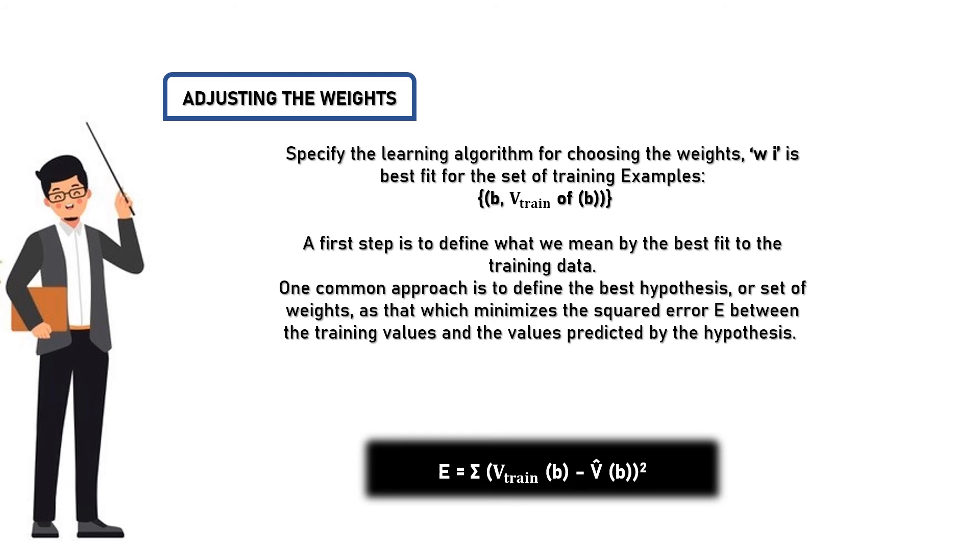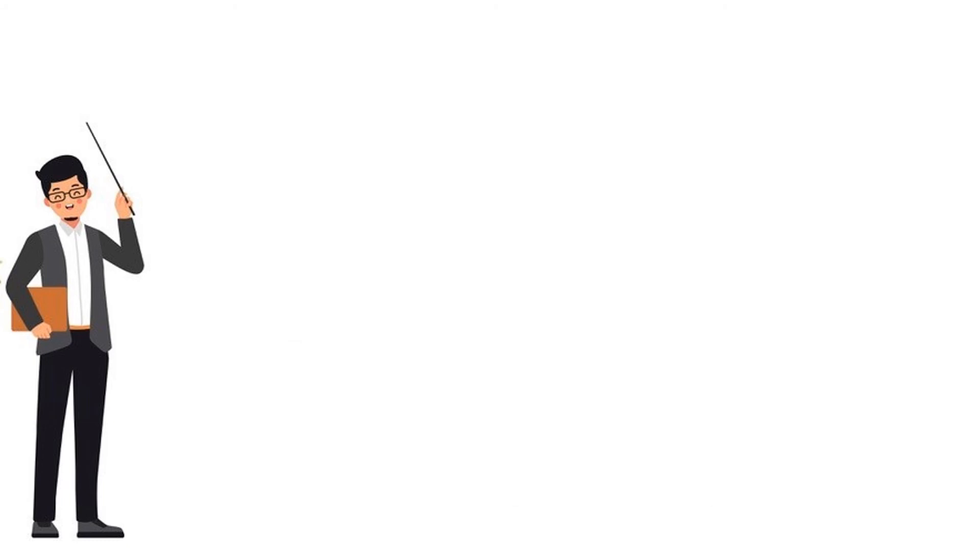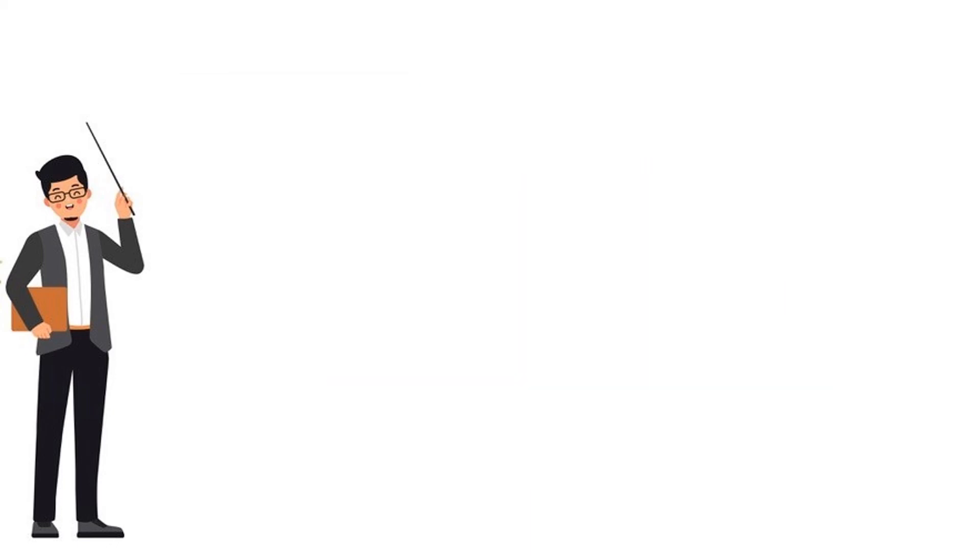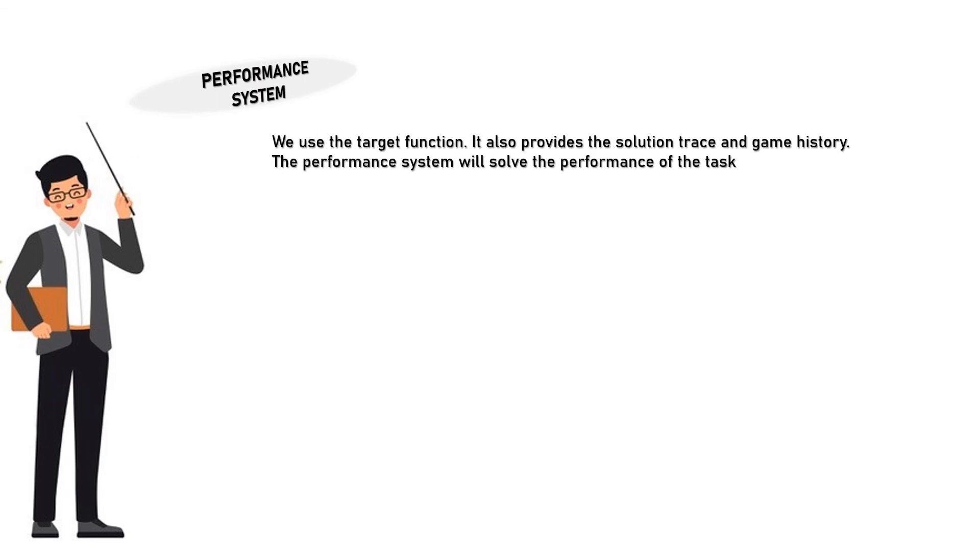Here we are using the whole square to reduce the errors. Next final keynote is the final design. Five: the final design. It is divided into four modules: performance system, critic, generalizer, and experiment generator.